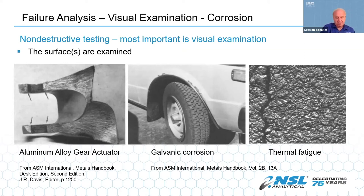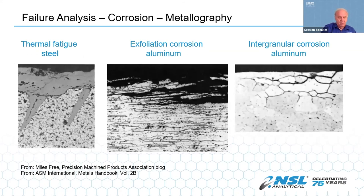Thermal fatigue only occurs in places where the part saw significant changes in temperature, like die casting dies. You typically see a lot of cracking on the surface — most of the time it's called heat checking. When you do metallographic cross-section through the crack, it usually has a carrot-like look. Sometimes there's a crack down the middle, sometimes not.